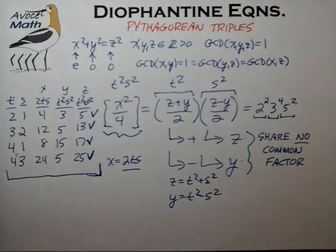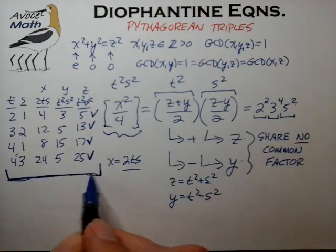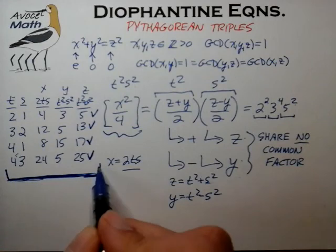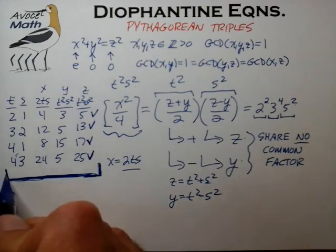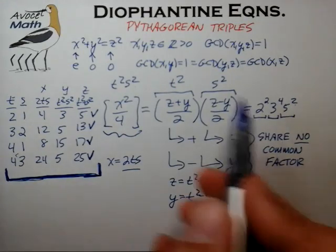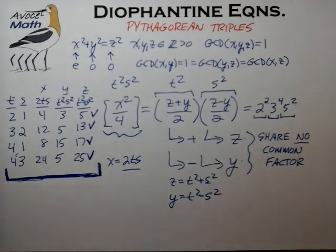This is also described in the PDF note file distributed earlier in the Dropbox set, so go back and take a look if this is confusing. In the next video lecture we'll do a recap and explore this result a little further, which will complete our treatment of the Pythagorean triple generator function. See you at the next video.